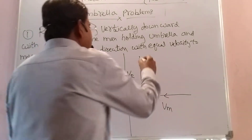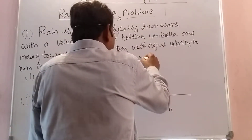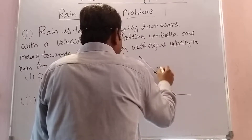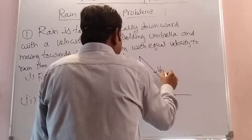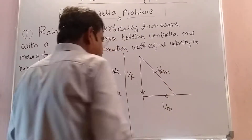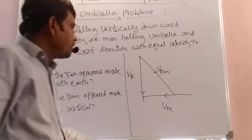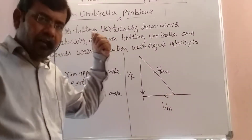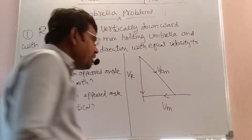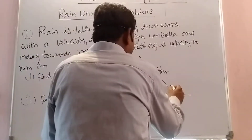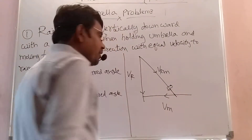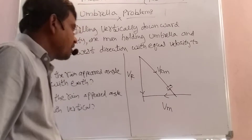It is a relative velocity change. So this is our relative velocity — this is the velocity of the rain with respect to the man. The angle it makes is the direction along which he must hold the umbrella. That is the concept.